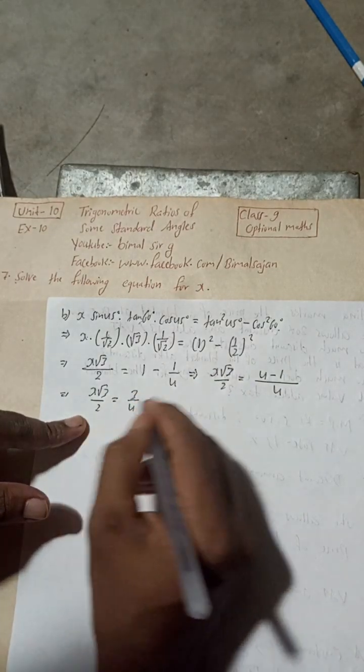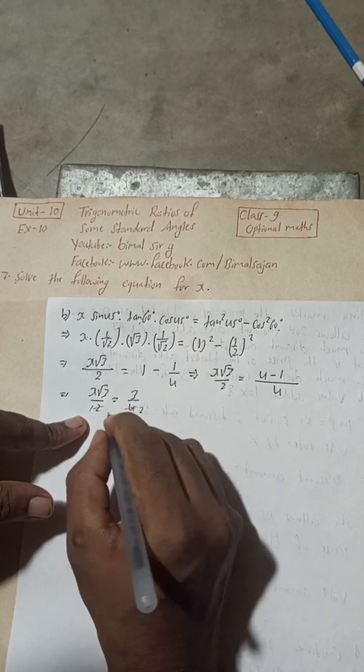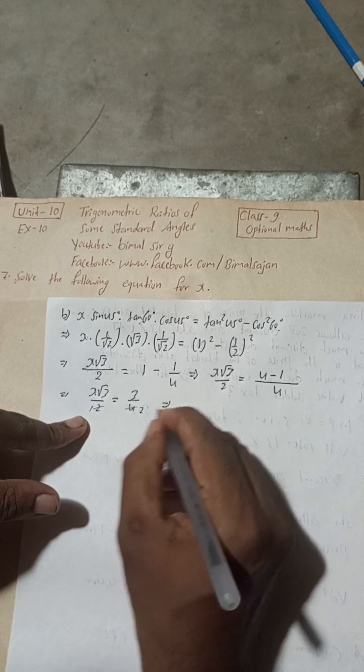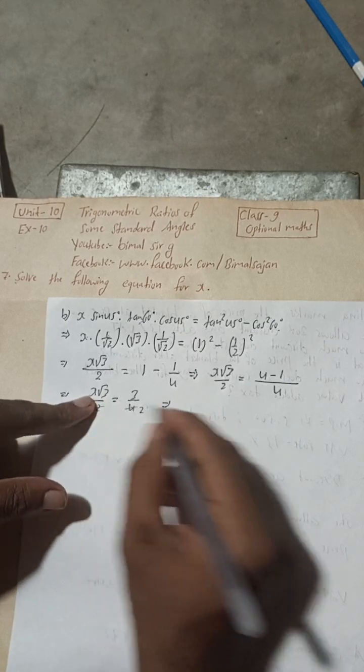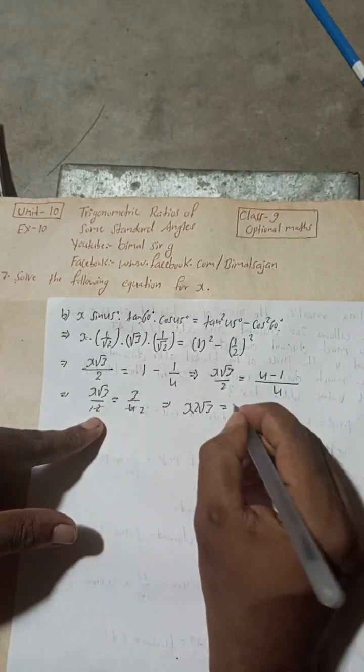You can cancel this, 2 ones are 2 and 2 twos are 4. Now if you cross multiply you will get here x, so this will be x 2 root 3 is equal to 3 into 1, 3.